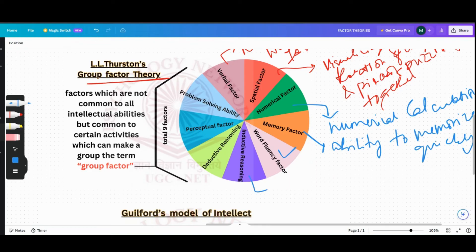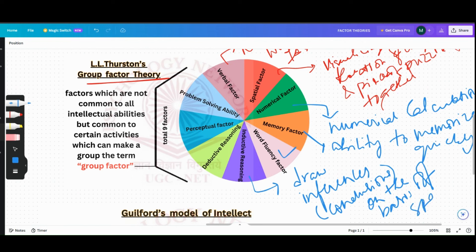Then coming to Inductive Reasoning, basically it is the ability to draw inferences - conclusions on the basis of specific instances. This was Inductive Reasoning. Deductive Reasoning is the ability to make use of generalized results.